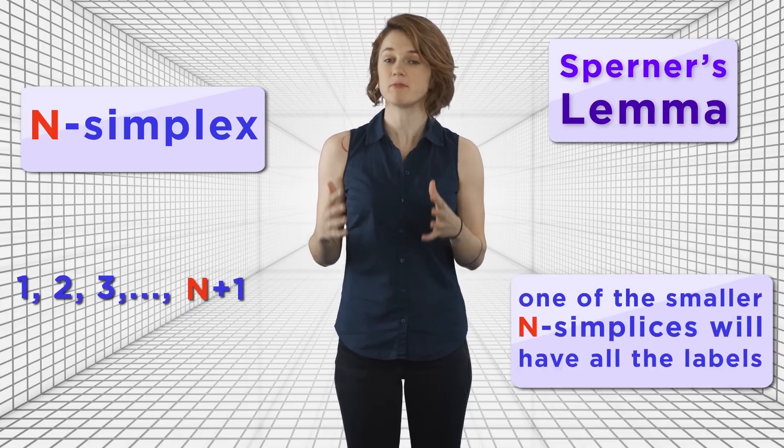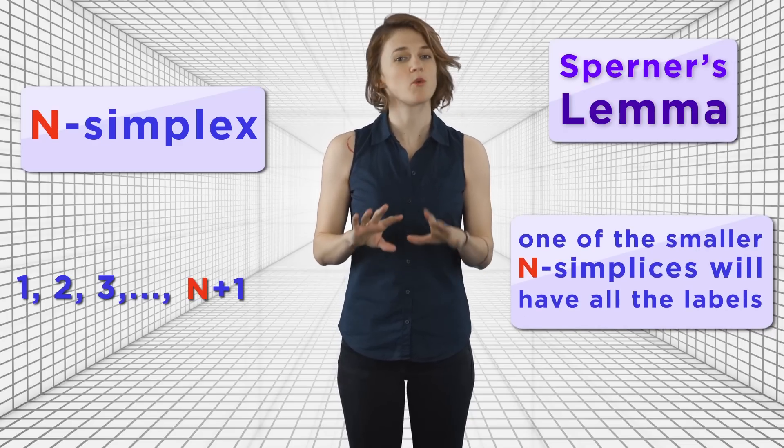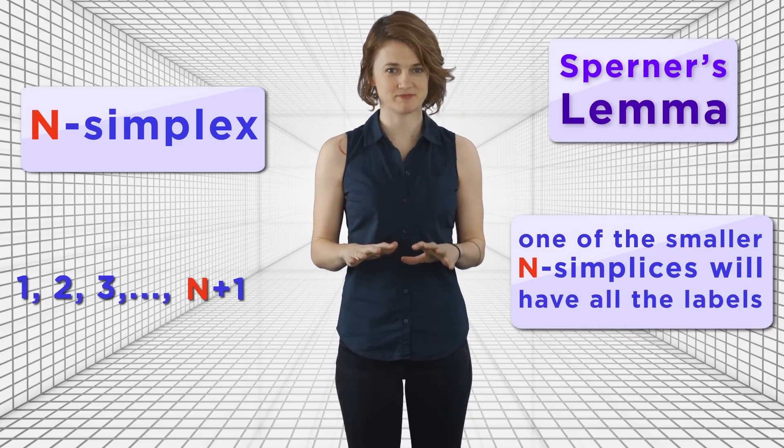This same idea gets you a simplex in any dimension. And if you break an n-simplex into smaller n-simplices and label the vertices using the numbers 1 through n+1, just like we did with the two-simplex, Sperner's Lemma tells you that one of the smaller n-simplices will have all the labels on it.